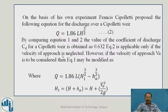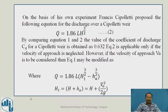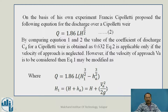The velocity of approach VA is neglected in that case. However, if the velocity of approach VA is to be considered, then equation 1 becomes Q = 1.86 L [H1^(3/2) − HA^(3/2)], where H1 is nothing but H plus HA, which equals H + VA²/(2G). HA is nothing but VA²/(2G), and VA is the velocity of approach.